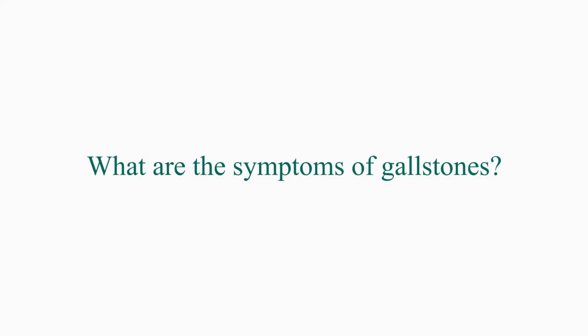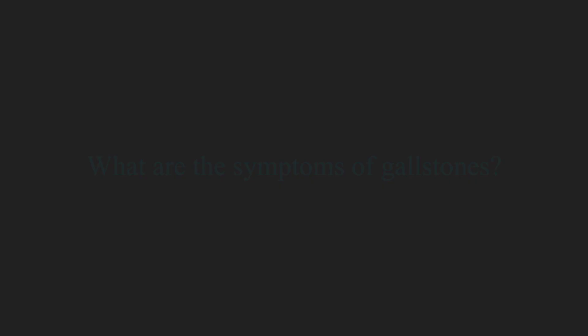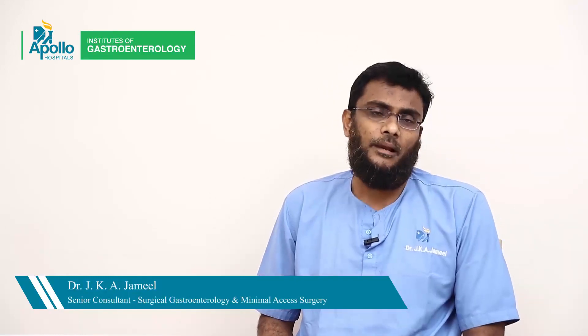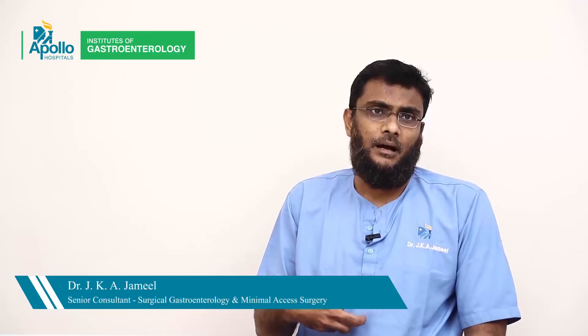These stones can happen anywhere in the biliary system, but they occur most often in the gallbladder because that's where the bile is most stagnant. The most common symptom of stones in the gallbladder is abdominal pain. This pain usually occurs in the upper abdomen on the right side underneath the ribs, and it can go to the back and sometimes to the right shoulder blades. This pain can occur anytime during the day but typically occurs after a heavy or fatty meal. Sometimes patients can have constant pain associated with fever and vomiting.